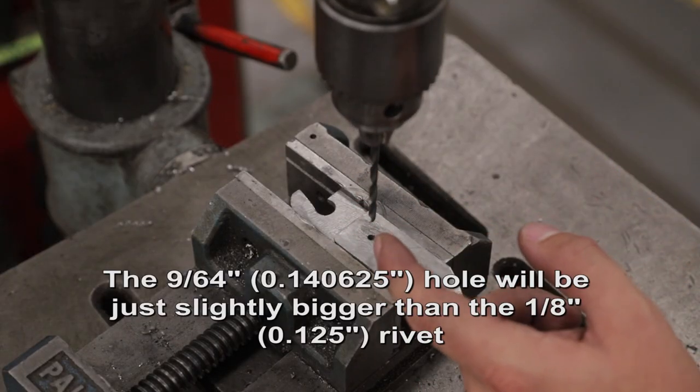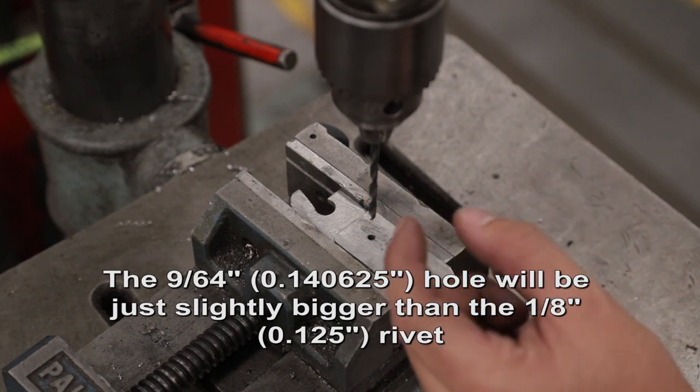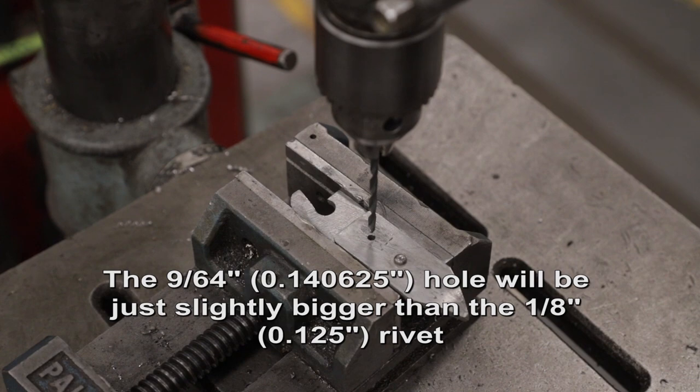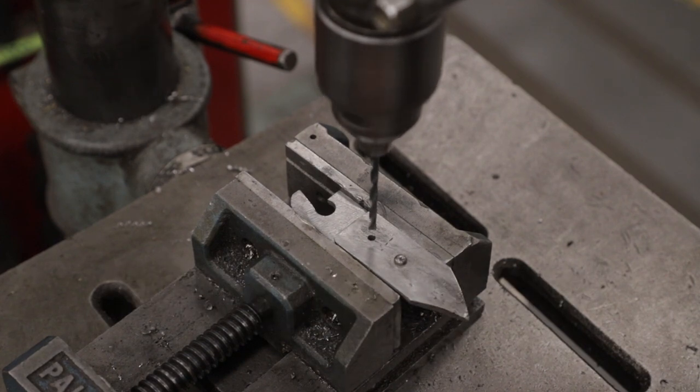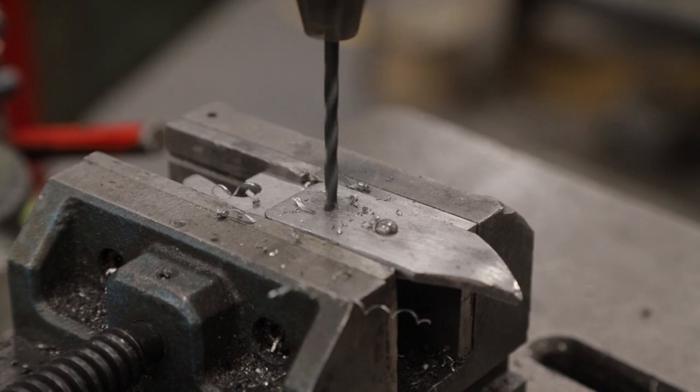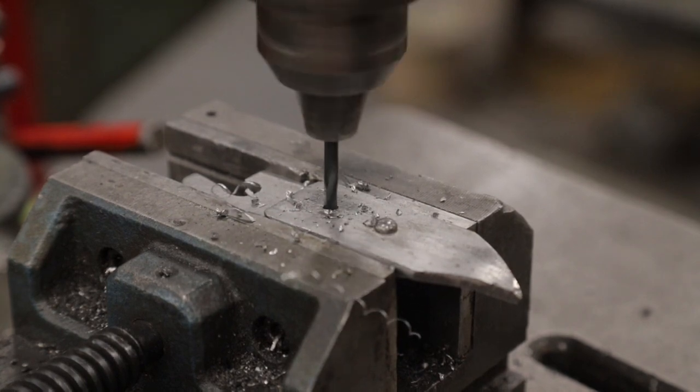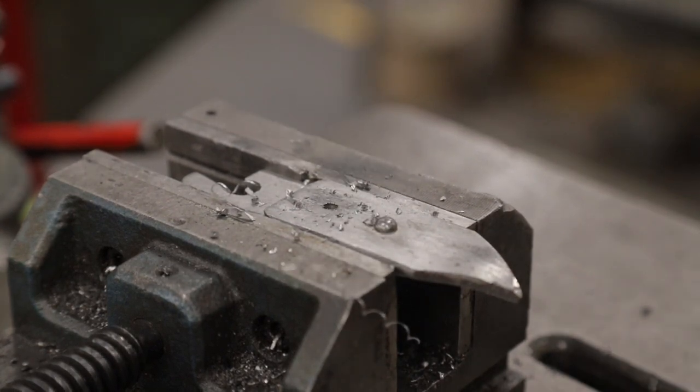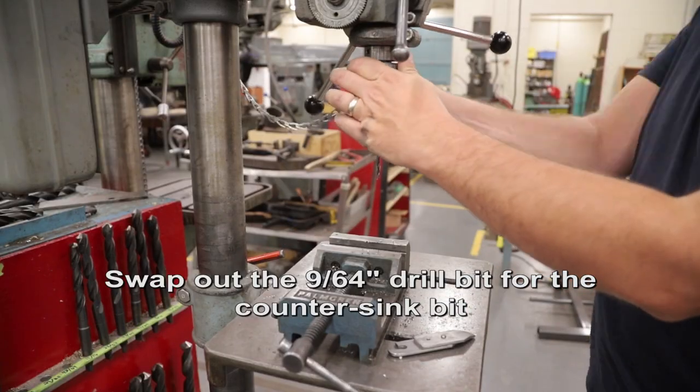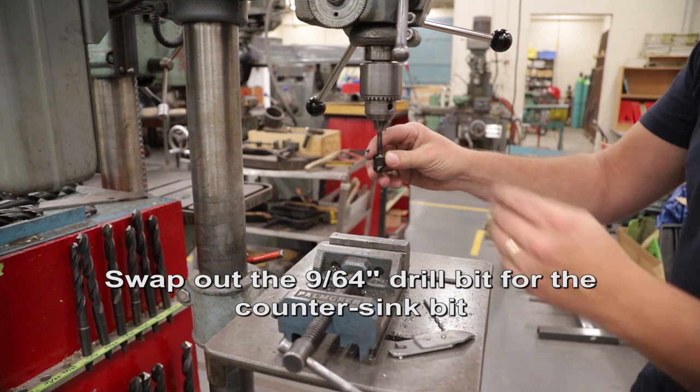Make sure you have the correct drill bit. Again, I'm using a 9/64th drill bit which is just slightly bigger than the rivet I'm using. That makes it a little bit easier for students to get it right. Install your countersink bit.